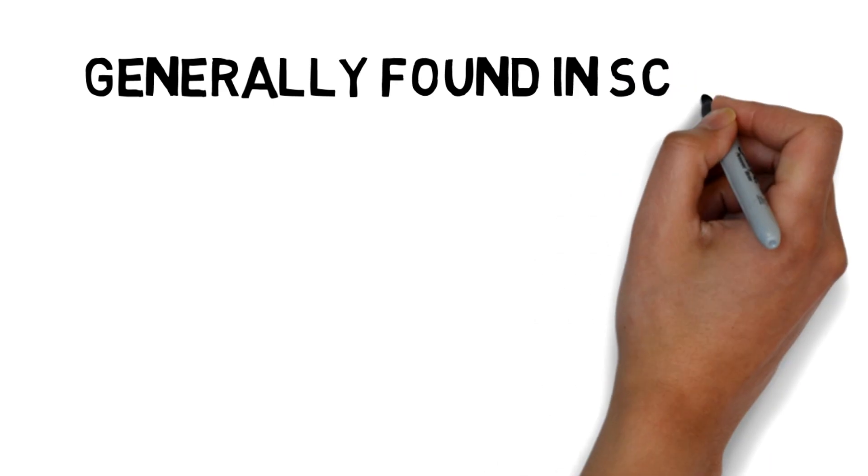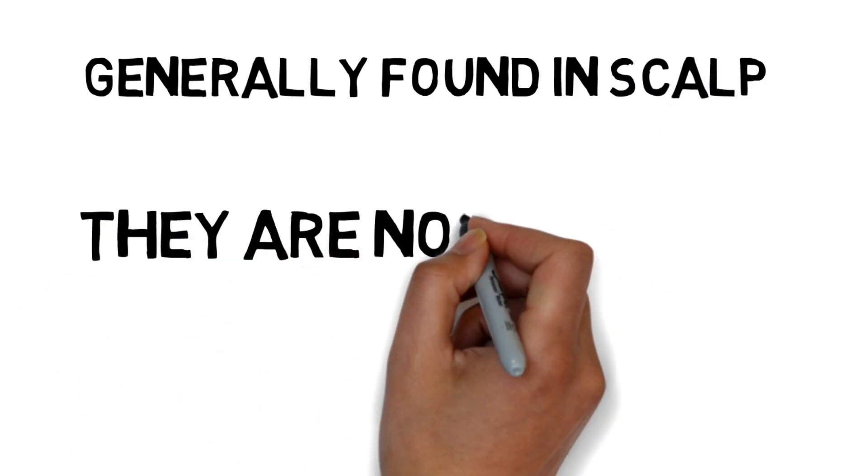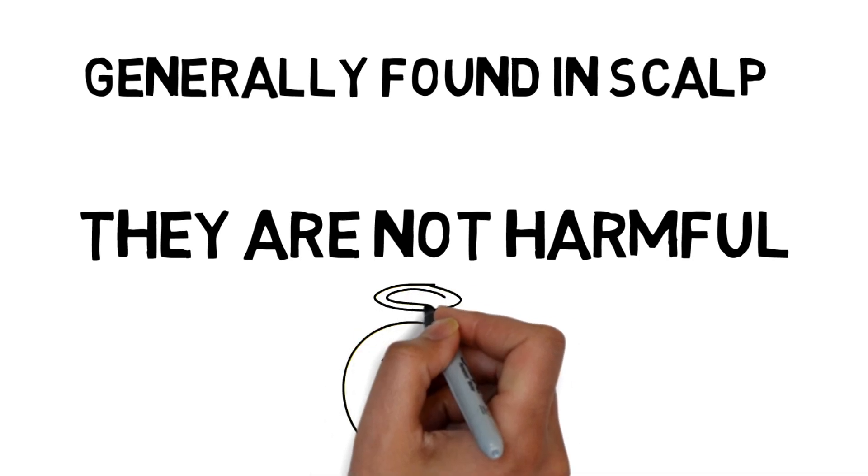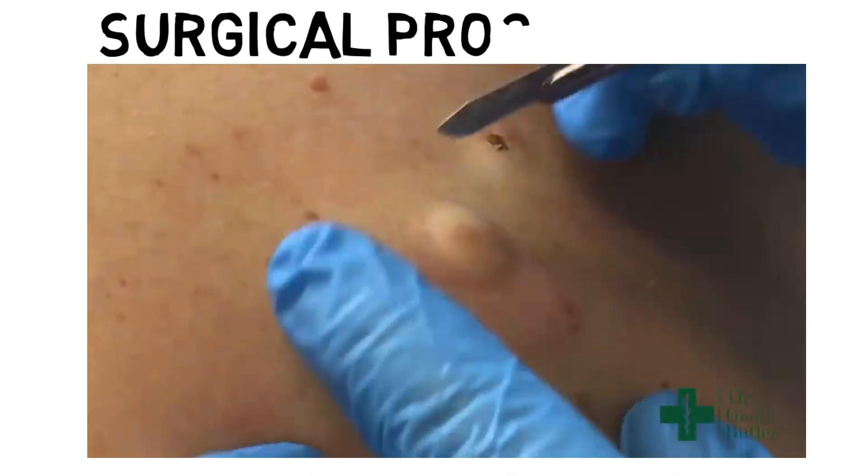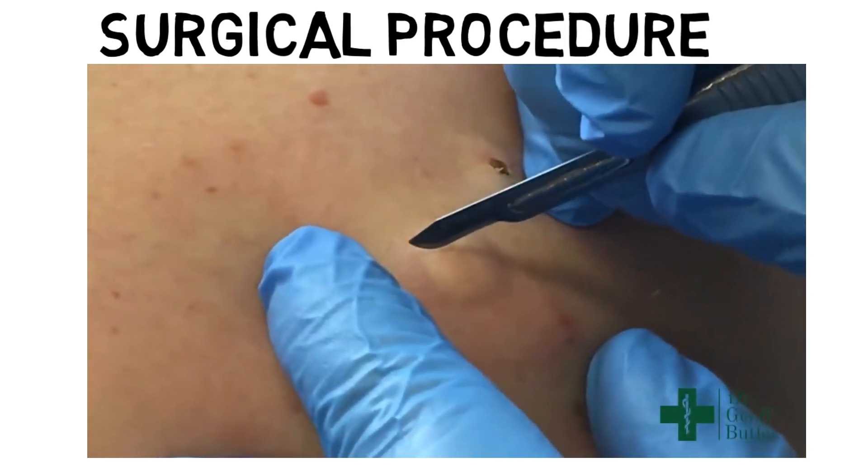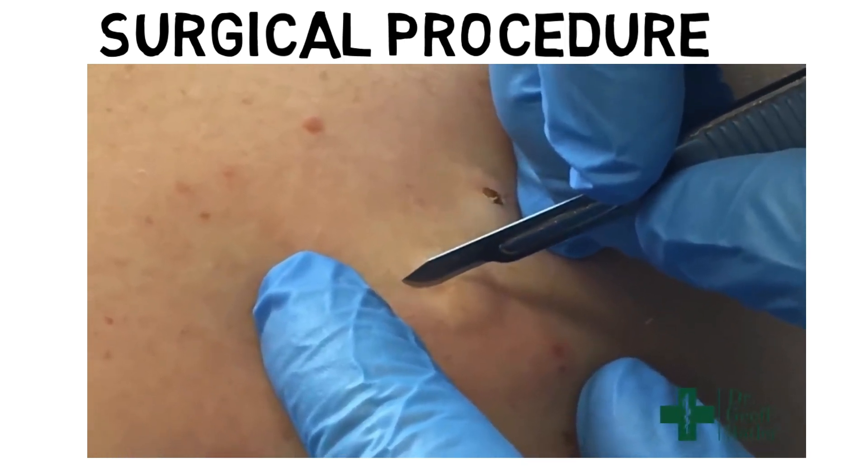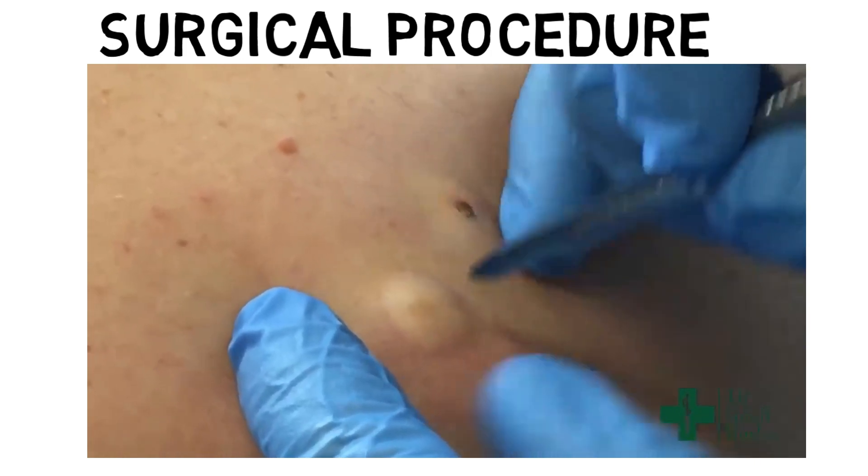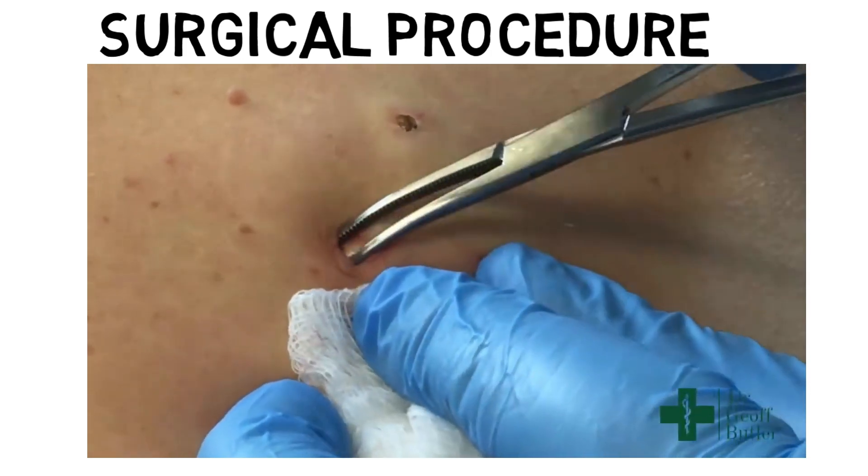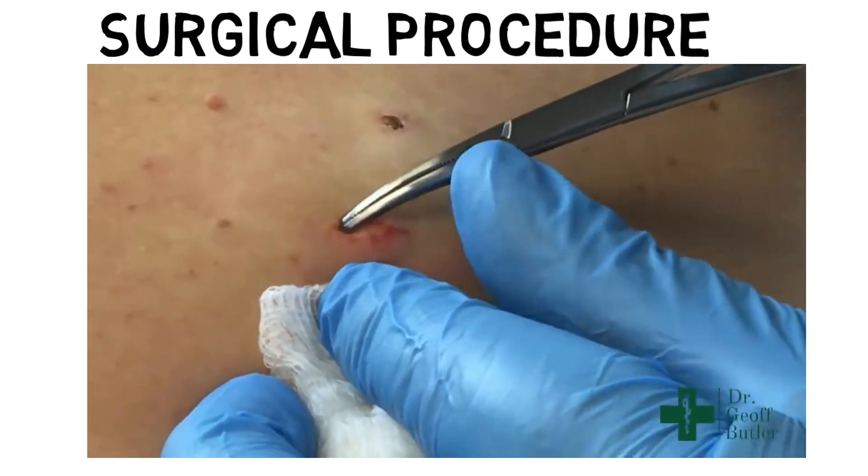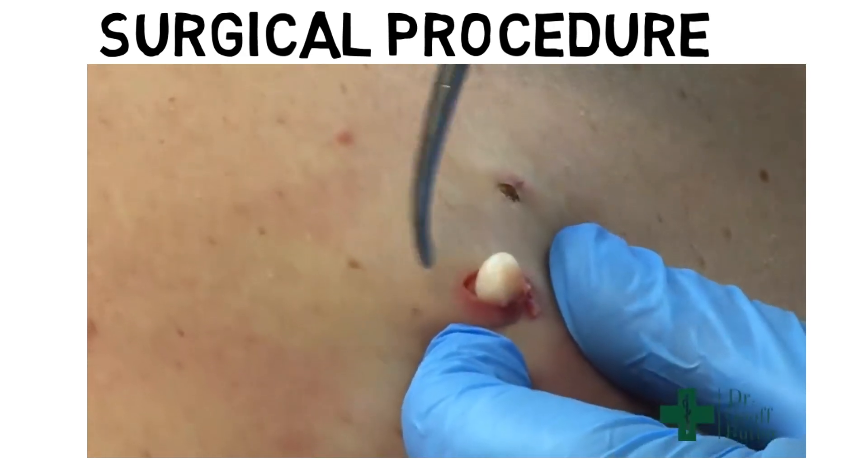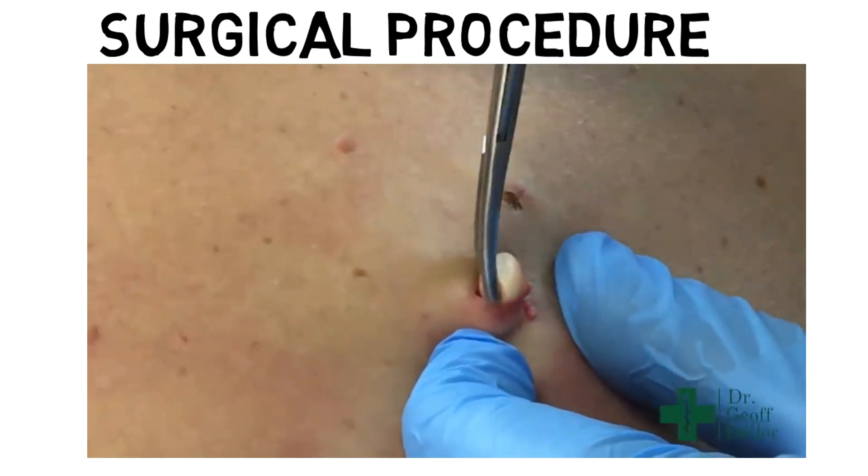Sebaceous cysts are mostly found in the scalp as sebaceous glands are maximum at this site. Generally these cysts are not harmful, but many opt for surgical procedures. In surgery, they apply local anesthesia over the cyst, then a fine precise incision is done over the cyst. The skin over the cyst is retracted and exposed.